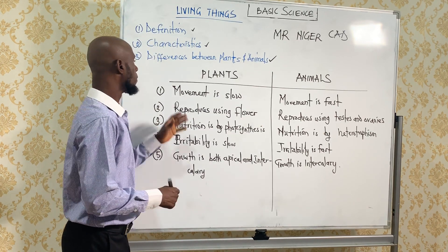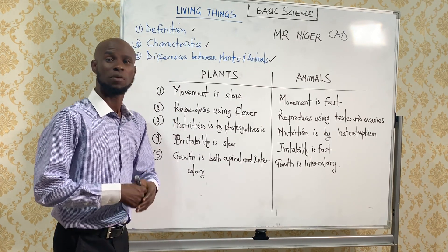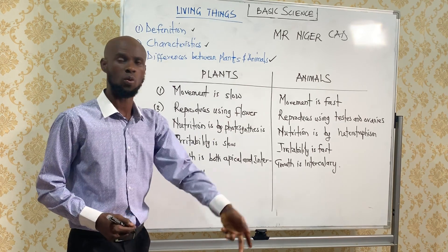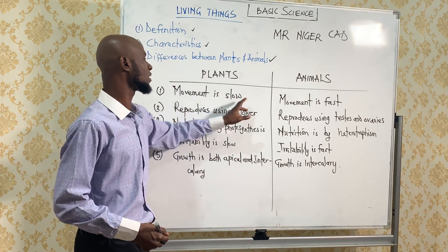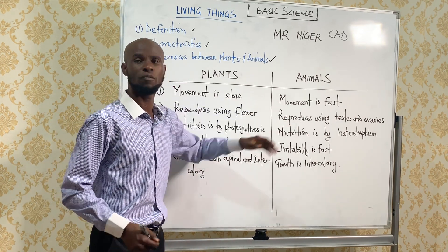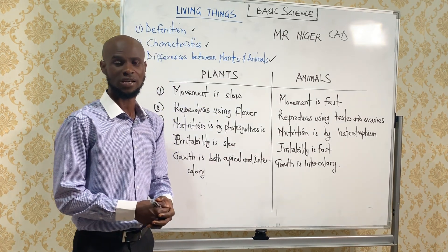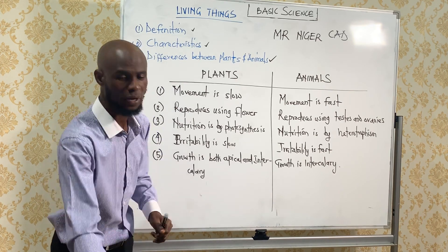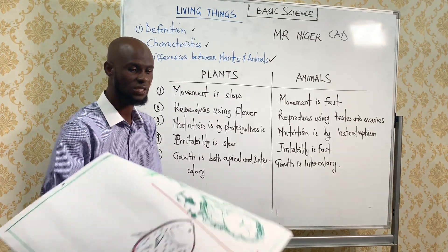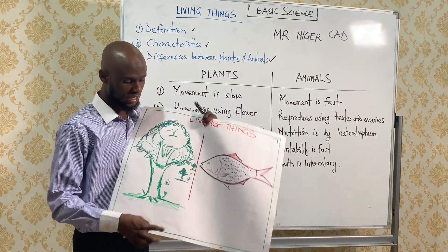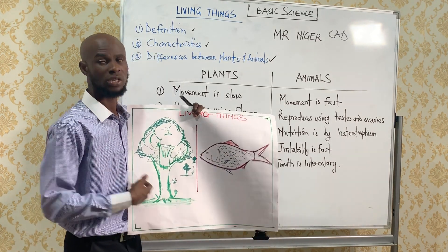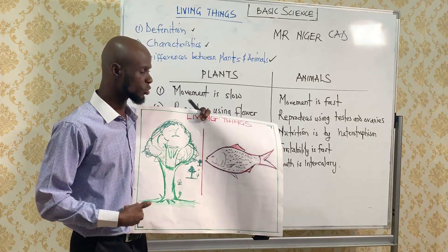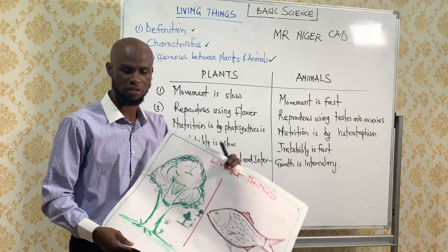For example, movement. Movement in plants is slow, while in animals movement is fast. The reason is that plants are always rooted into the soil, so they do not move from one place to another.